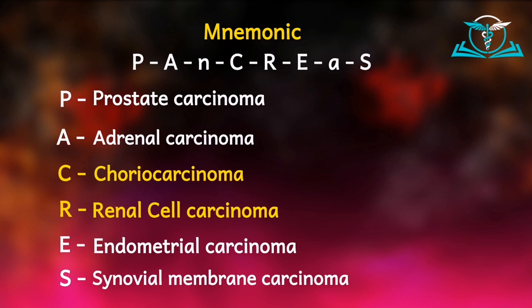I wrote C and R in capitals — choriocarcinoma and renal cell carcinoma — because these two conditions are the most common causes of cannonball appearance on a plain chest radiograph. Please note that although we've mentioned other causes, choriocarcinoma and renal cell carcinoma are the most common causes of this radiographic pattern.